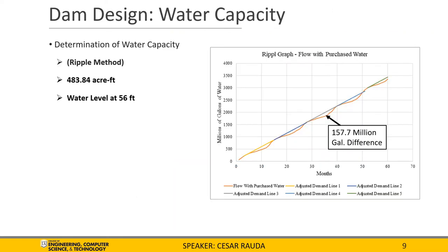Going on to the water capacity determination, we were able to do this using the ripple method. In the graph to the right, this is our final ripple method graph, which includes the flow with the purchased water. From here, we were able to determine the highest differential is 157 million gallons. We were then able to find the acre-footage, which is 483.84, and then find the water height for our project site, which is 56 feet.